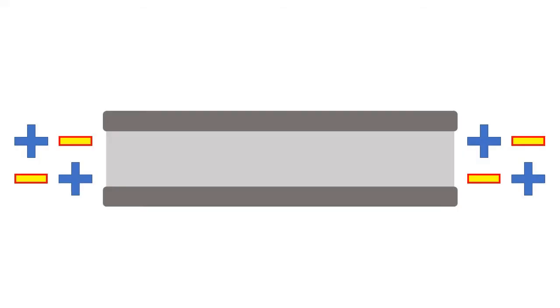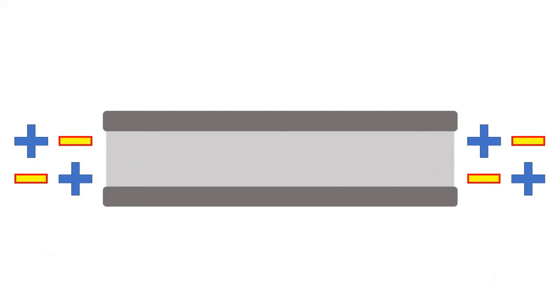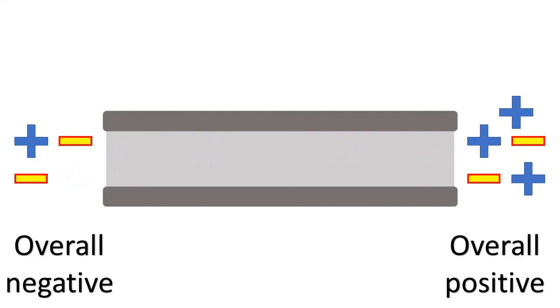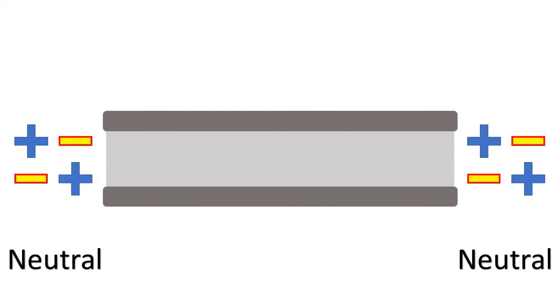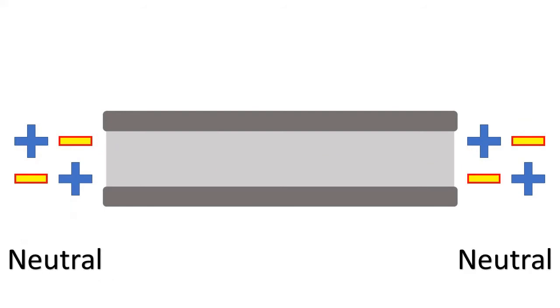Bear with me. If a negative charge moves from the right hand side to the left the right hand side is now more positive than it was before. Alternatively if a positive charge moves from the left hand side to the right the right hand side is again more positive than it was before. The flow of negative charge in one direction is equivalent to the flow of positive charge in the other direction.